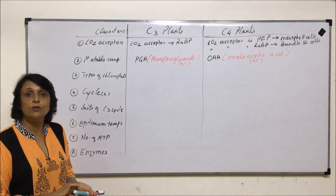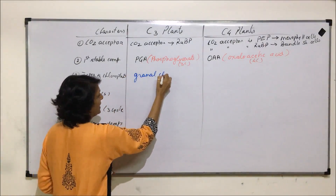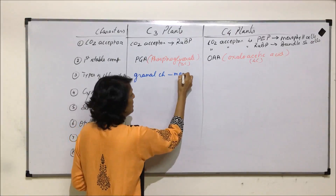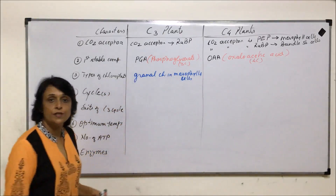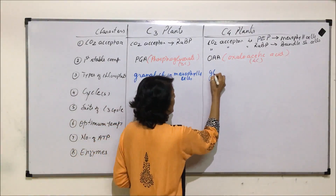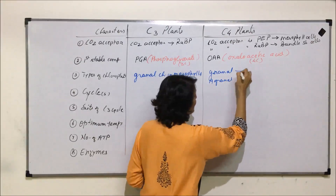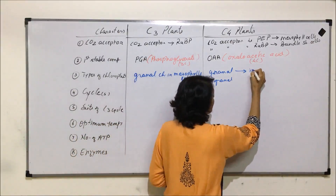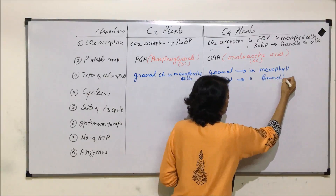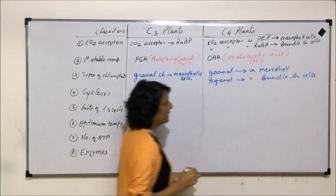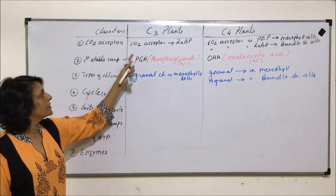The third point is about the types of chloroplasts. In C3 plants, only granal chloroplasts are present, and these are located in mesophyll cells. In C4 plants, there are two types of chloroplasts: granal chloroplasts in mesophyll cells and agranal chloroplasts in bundle sheath cells. So C4 plants have dimorphic chloroplasts.